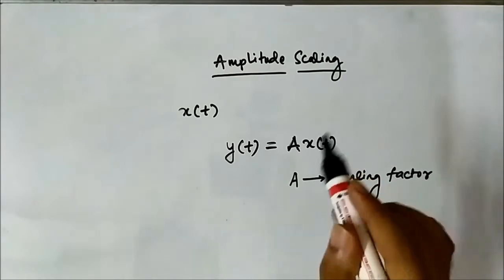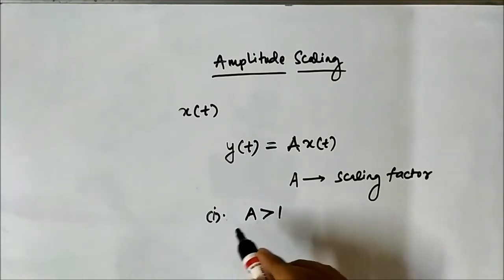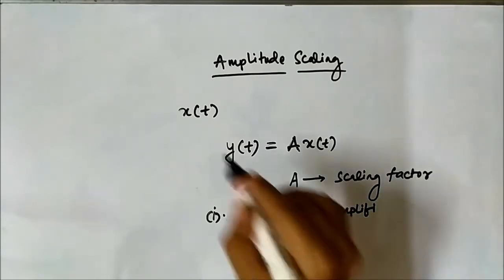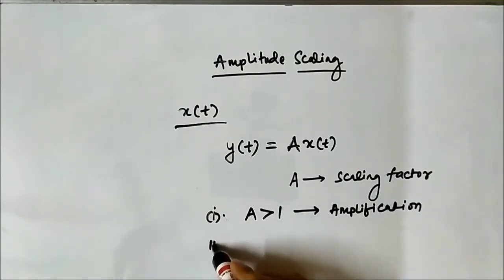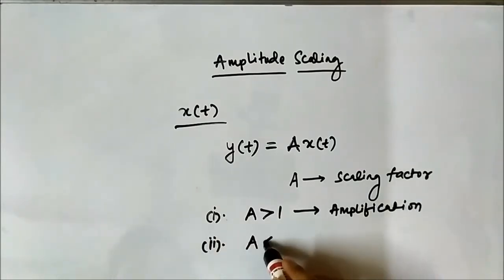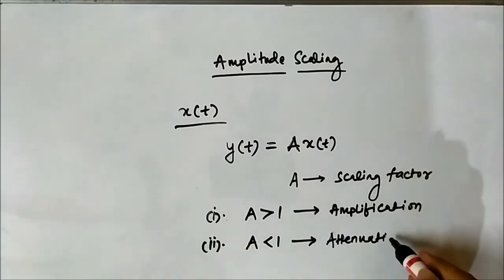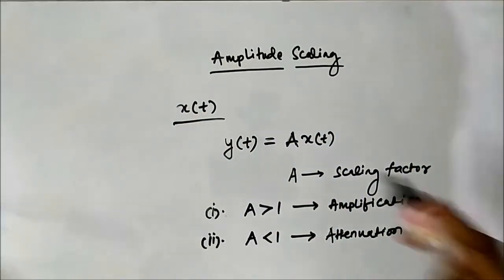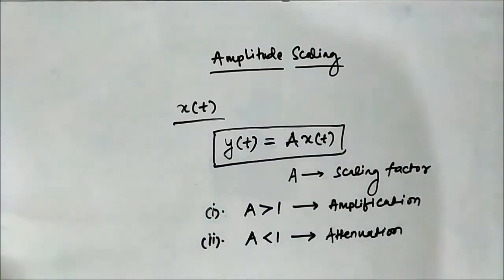There are two possibilities. If A is greater than 1, it will result in amplification of the original signal. The second possibility: if A is lesser than 1, then it will result in attenuation — the amplitude will decrease — attenuation of the original reference signal. This is the mathematical representation of amplitude scaling.